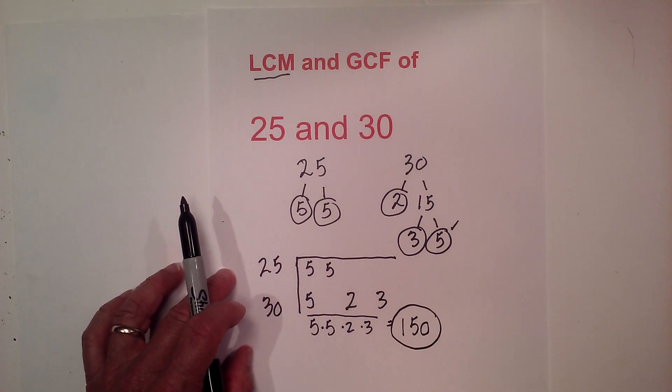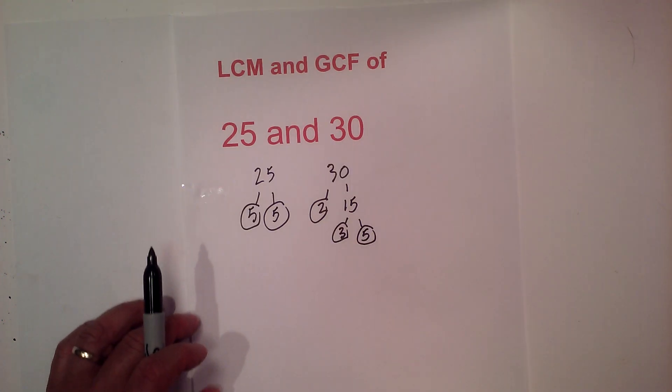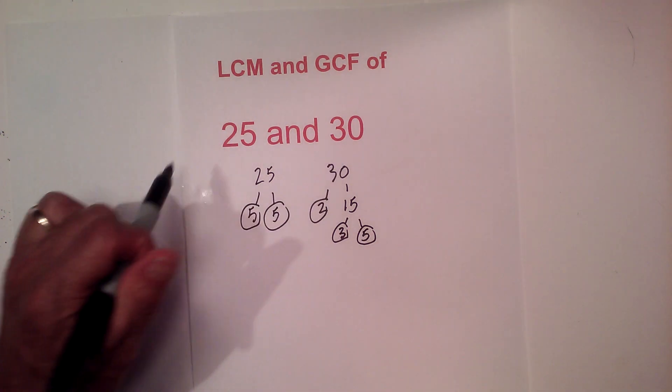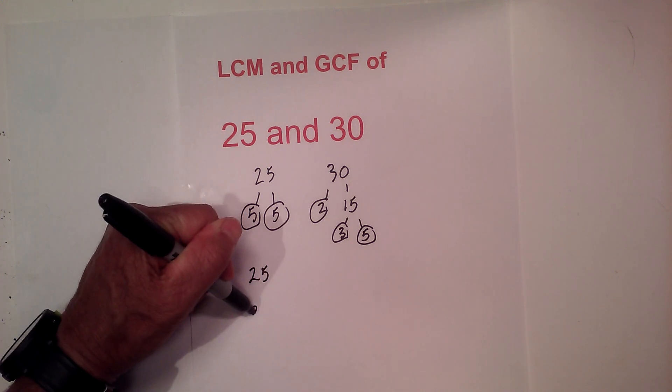Now let's focus on the GCF. The GCF is the largest factor that will divide into both of these numbers evenly. So let's go ahead and create another prime number factor table.